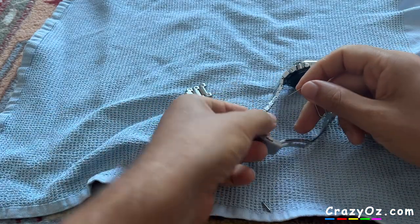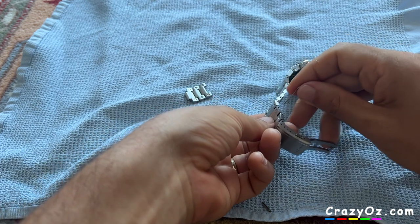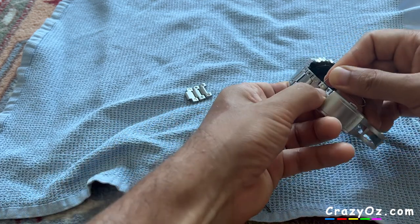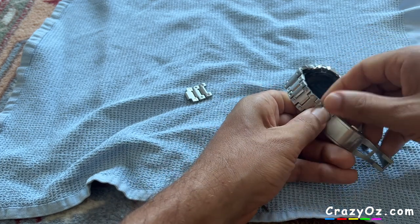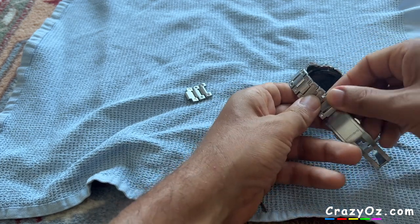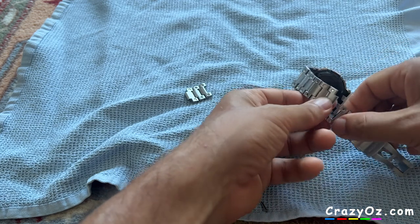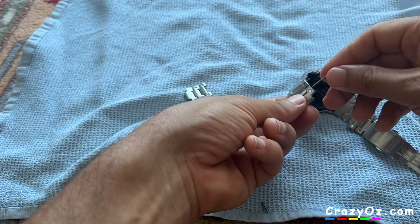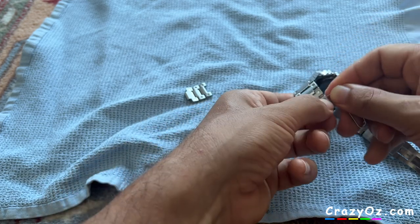As I said previously in the video, at first I thought I should take out three links on one side and one link out on the other side to take out four links in total. But having looking at the watch, it looks more balanced if I take out four links on the same side. So here what I'm doing is just taking out one more link on the same side.